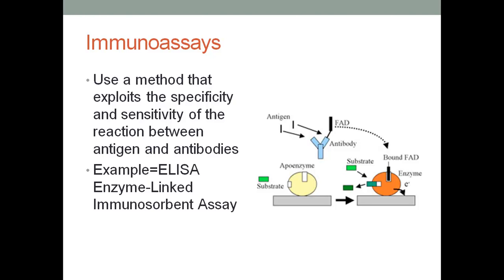Immunoassays are used to exploit the specificity and sensitivity of the reaction between antigens and antibodies — an antigen-antibody reaction. This can be used for HIV, Rocky Mountain spotted fever, hepatitis, or Epstein-Barr virus. This is also the way one would type a blood sample.